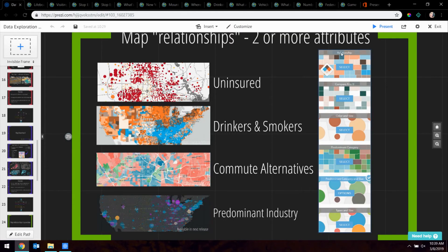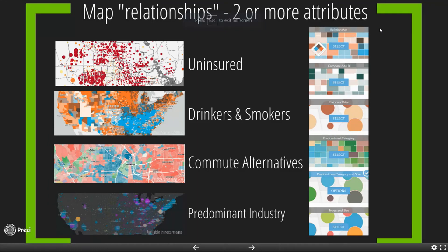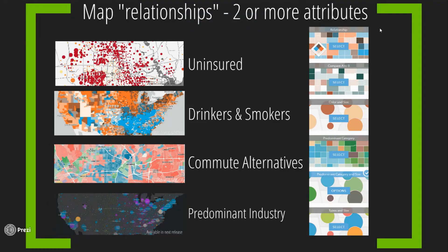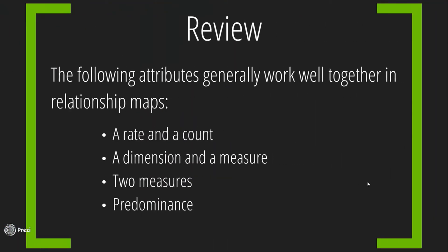The way we do this pop-up is by going into configure pop-up, with two Arcade expressions. In your pop-up there's an attribute expression section — for predominant category, we put all the features in and run an expression that returns the most common category: if it's this category, return 'carpooling,' et cetera. To change the color, if carpooling wins, make it red; if bus wins, make it this hex color. Then you put it into your expression in the HTML — there's a font color, and you put in expression one as the font color. There are lots of blogs about this, and you'll get the slides so you can copy and paste these expressions. Relationships are rate and a count, or a dimension and a measure, two measures, or predominance — like an election map would be a predominance map.